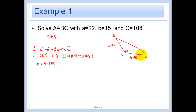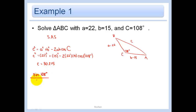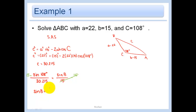Now I have the missing side length, but I still need the other two angles. I'll go back and use the law of sines. I use sinC/c because that's the only side-angle pair I have complete information for — sinC is 108° and c is 30.215. Setting up sinC/c = sinB/b with b=15, I multiply both sides by 15 to get sinB = 15·sin108° / 30.215. Taking the inverse sine gives me angle B.